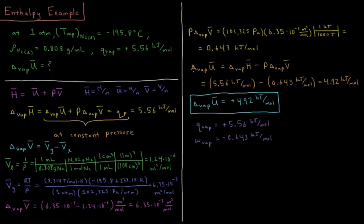So our molar internal energy change of vaporization equals delta VAP H-bar minus P delta VAP V-bar. That's 5.56 kilojoules per mole minus 0.643 kilojoules per mole is 4.92 kilojoules per mole. So the change in internal energy of our nitrogen as it goes from liquid to gas at 1 atmosphere and minus 195.8 degrees Celsius is 4.92 kilojoules per mole.